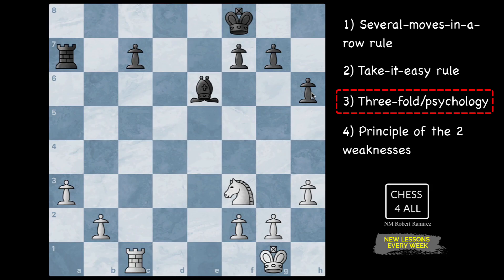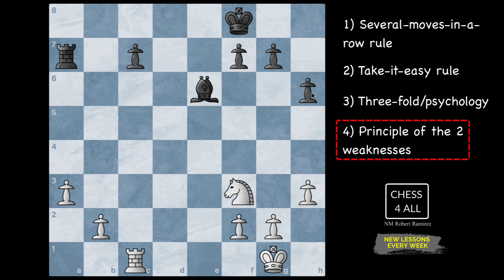Lastly, we're going to have an opportunity to briefly talk about the principle of the two weaknesses. This is something that we have to dedicate a full lesson to, but it is extremely important. I know that we have a lot left to talk about the Kinsinian defense — we have covered it for the last five lessons or so, and we're going to go back to it. But I like to talk about openings, middle game, and endgames, so let's take a break from it just for a little bit.